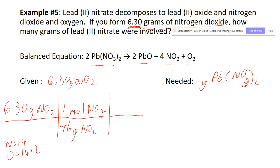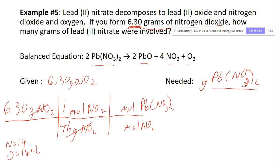That cancels the grams of NO₂. Now going from moles of NO₂ to moles of Pb(NO₃)₂ using the balanced equation: the coefficient for NO₂ is 4 and for lead nitrate is 2. That gets rid of moles of NO₂ and gives us moles of Pb(NO₃)₂.